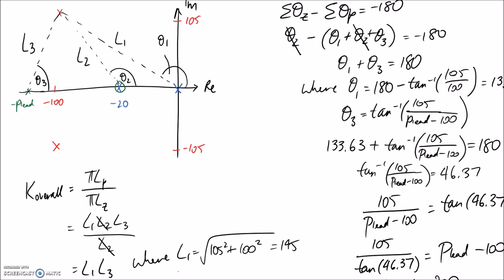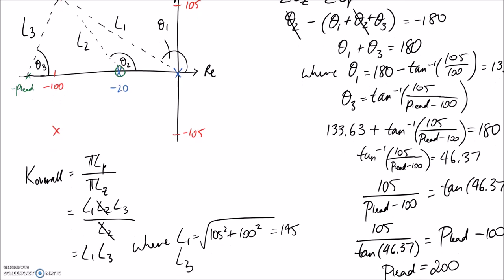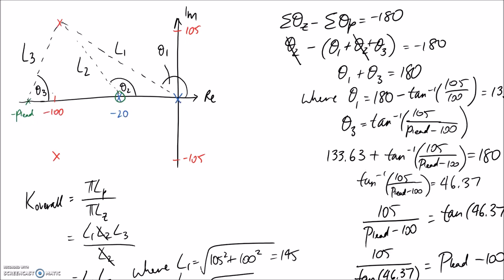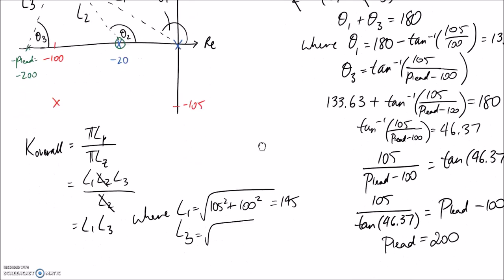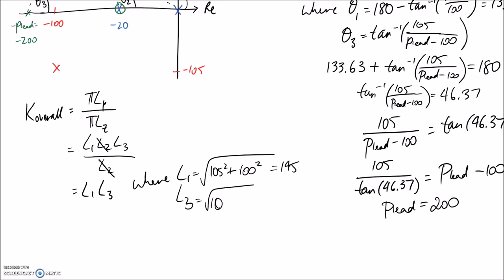For L3, now that P_lead is at negative 200, the horizontal distance is 200 minus 100 equals 100, and the vertical is 105 — the same as L1 — so L3 is also 145. Substituting back, K overall equals 145 times 145, which comes out to about 21,004. Carrying through more significant figures gives us this precise value.